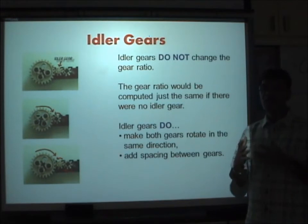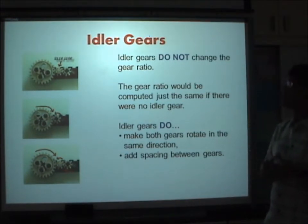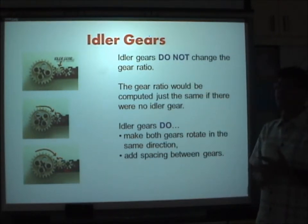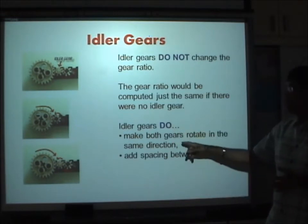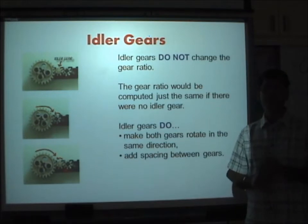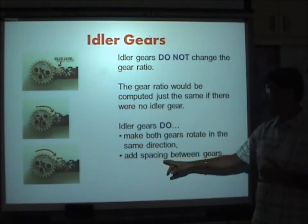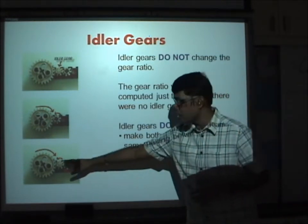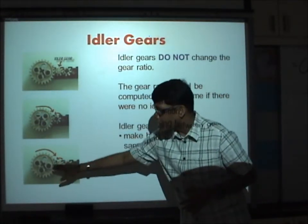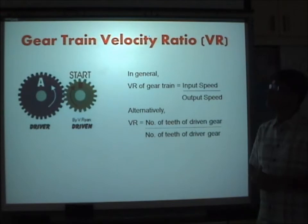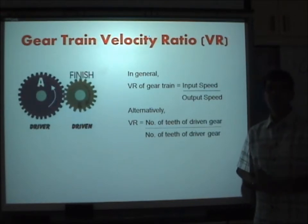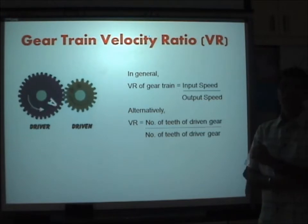The idler gear does not change the gear ratio — the gear ratio is compounded the same as if there were no idler gears. The main function of the idler gear is to make both the driver and driven gears rotate in the same direction, and also to add spacing between those gears.